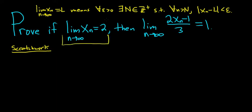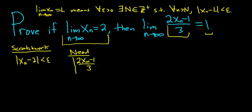Well that would mean that for all epsilon greater than zero, we can find some positive integer, etc. And the important part is that the distance between x_n and 2, we can make this less than epsilon. We have this for any epsilon. So what we need, what we need is we need the distance between this and 1 to be less than epsilon. So we write it down. So 2x_n minus 1 over 3 minus 1. And we want this to be less than epsilon.